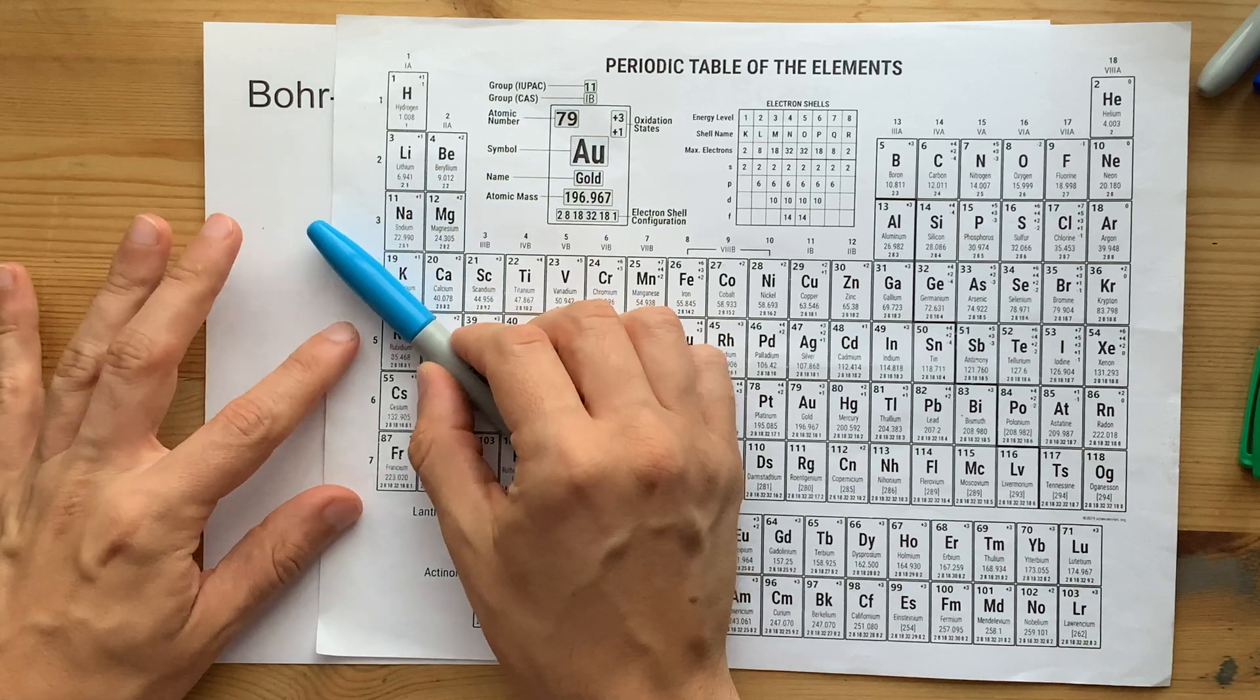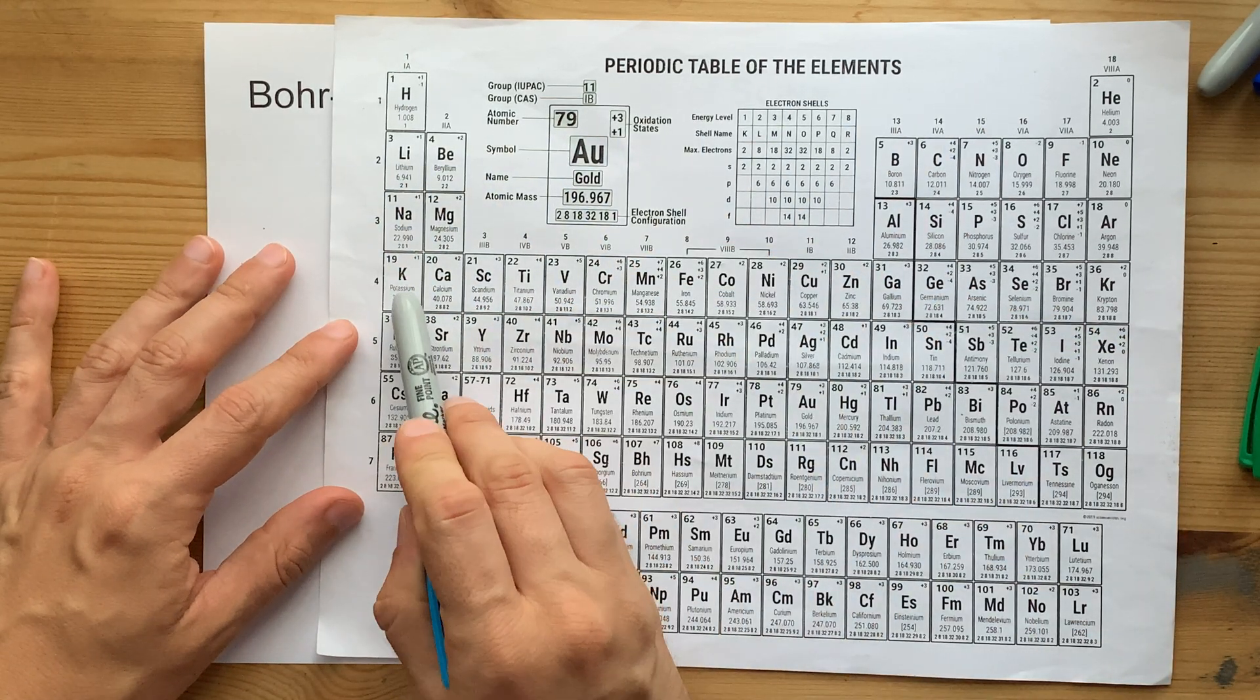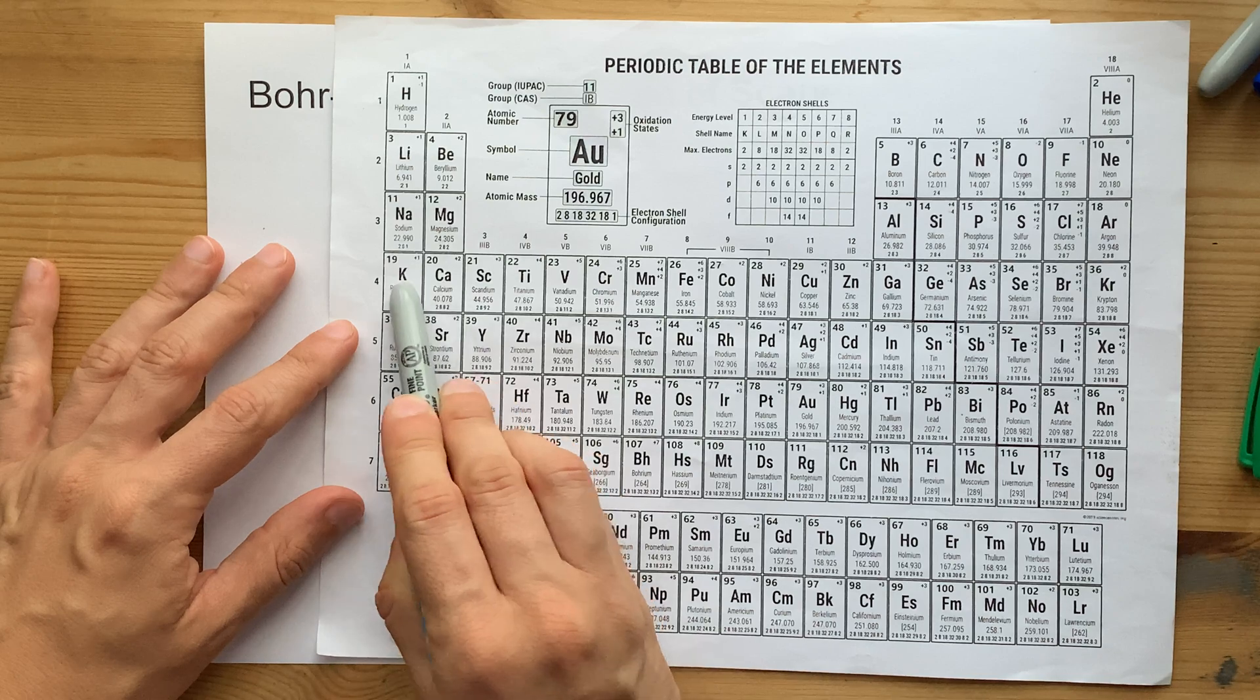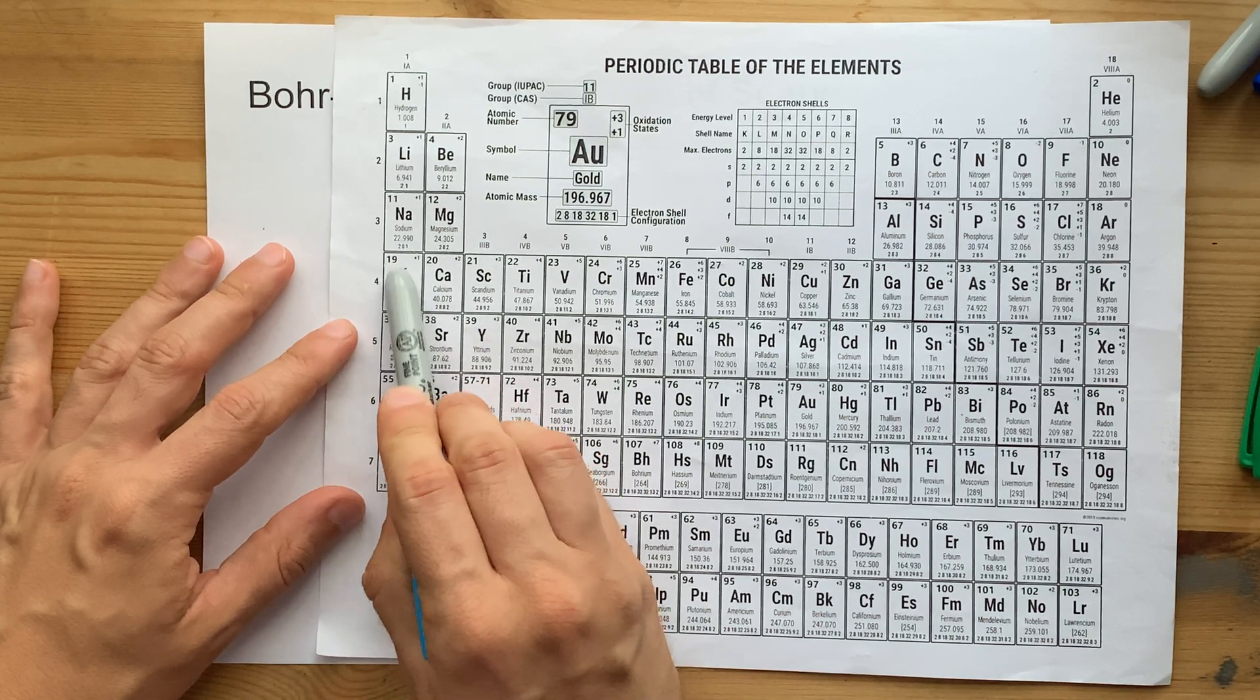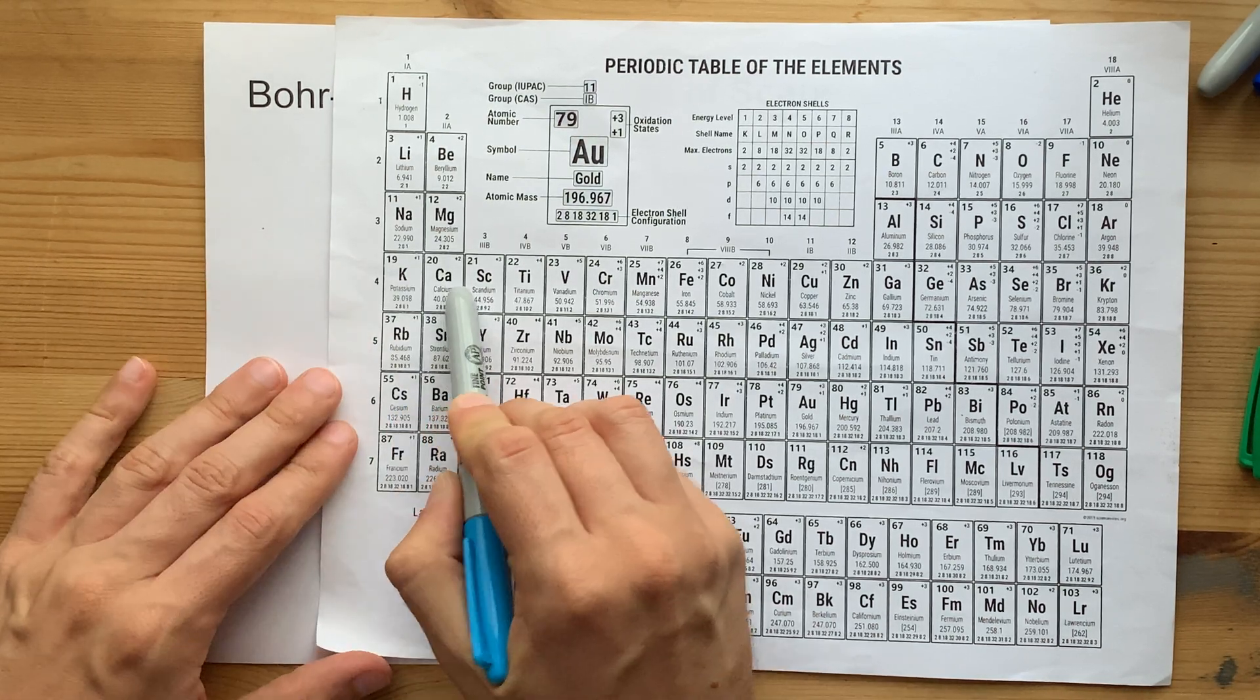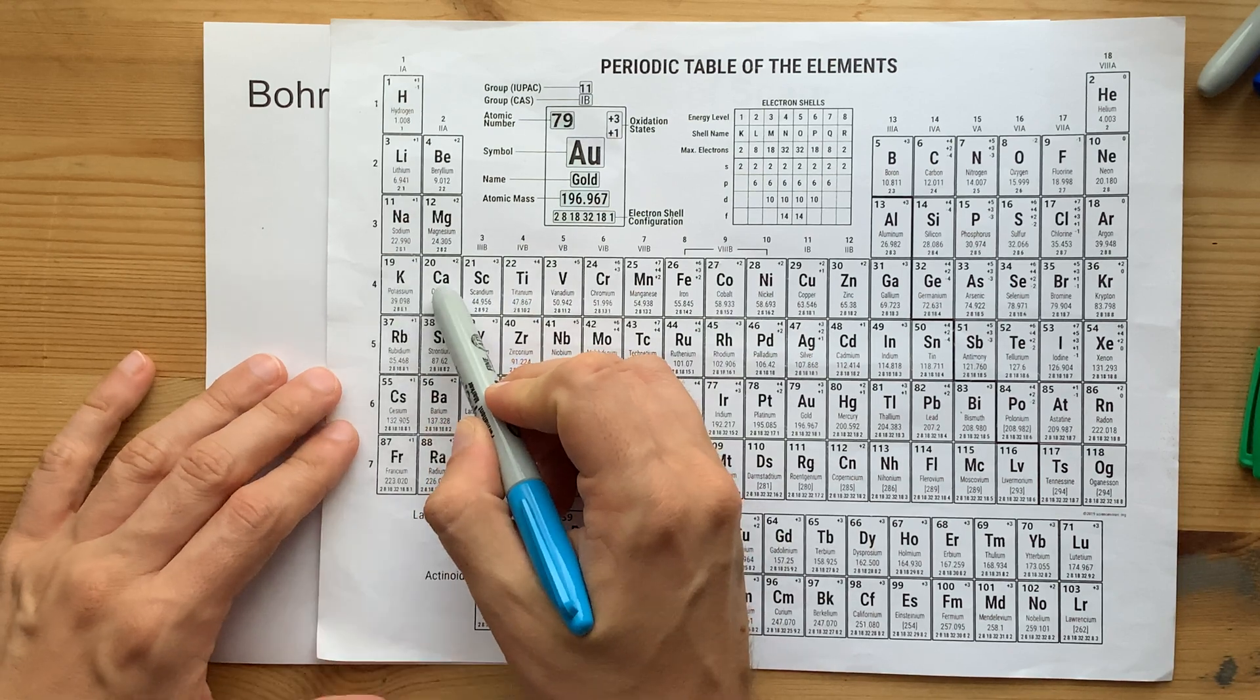Now, if you're learning this, it's probably because you're supposed to know that the two electrons that correspond to the 19th and 20th in an atom go into the 4s subshell.